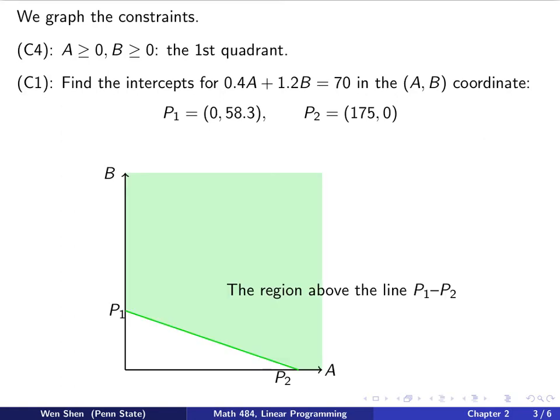Now we can graph this. In the AB plane, we find the point P1, which is on the B axis, where A is 0, and we find the point P2, which is on the A axis, and B is 0. Then we connect P1 and P2, which is this deep blue color. It's a straight line. We know this is the boundary of the region. Because of constraint C4, we are only discussing cases in the first quadrant. The region that will give you the bigger than equal sign would be the region that's above this line in the first quadrant. Here we show it with a shaded light green color. This is how you take care of constraint 1.